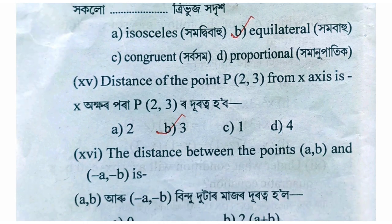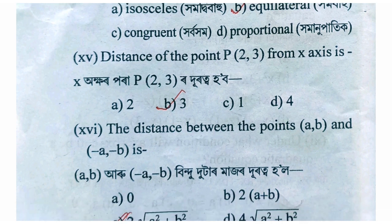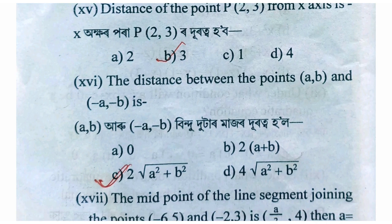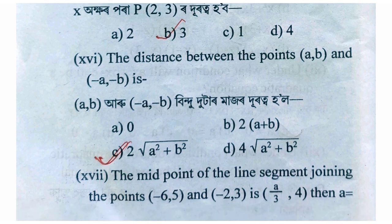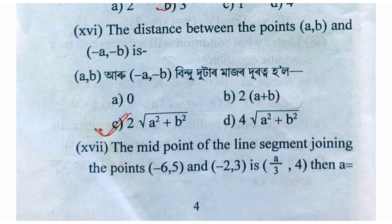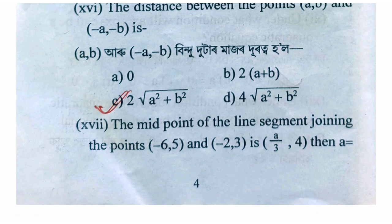Here is the distance between the points A, B and minus A, minus B. Solving: distance equals root over (A minus (minus A)) squared plus (B minus (minus B)) squared, which equals root over 4A squared plus 4B squared, equals 2 root over A squared plus B squared.